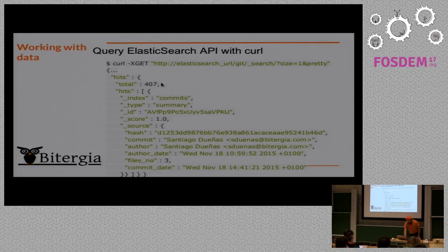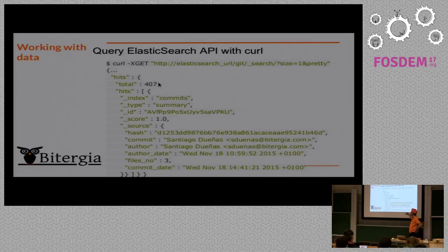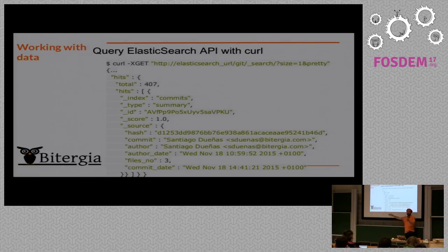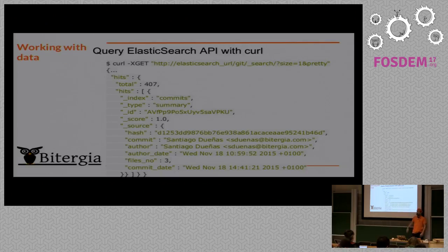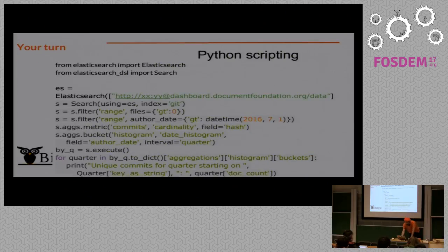From the query result you first get the size of the index — in this case 407 documents — and then an example hit, which is one of the retrieved documents. For a commit you have the hash, the commit, the author, the author date, the commit date, and more — basically what you'd get from git log with all parameters. So if you need to know how many commits a person made, you just substitute that query with a query for that field. It's not rocket science.